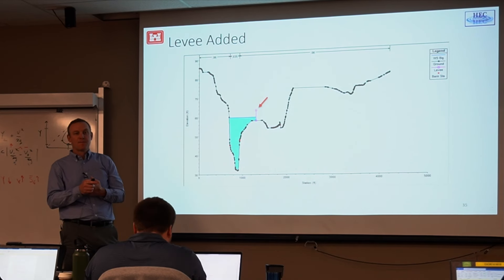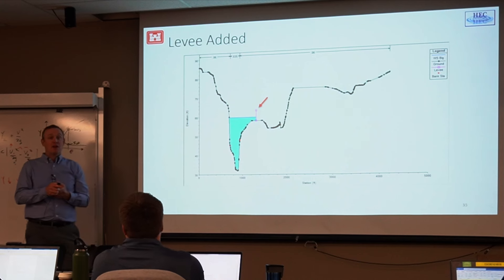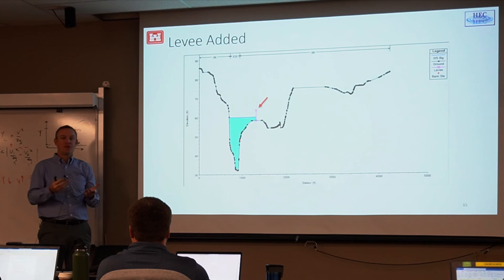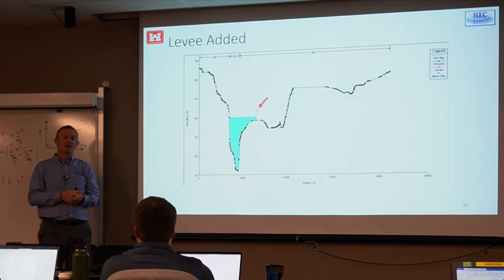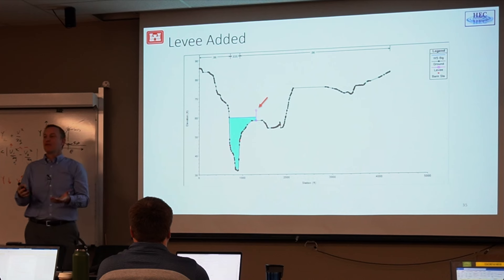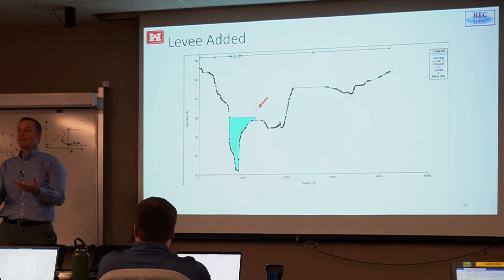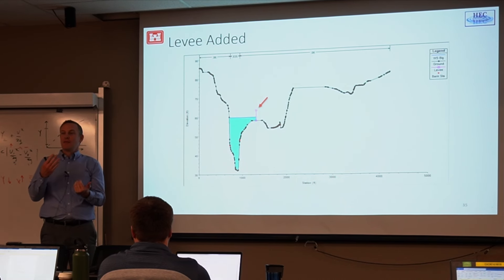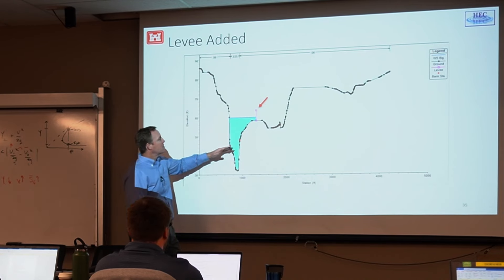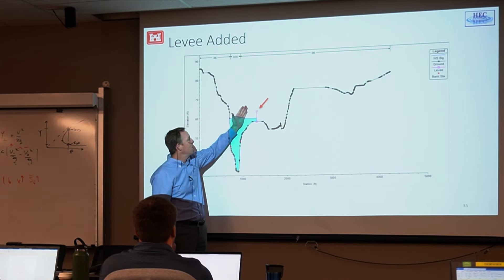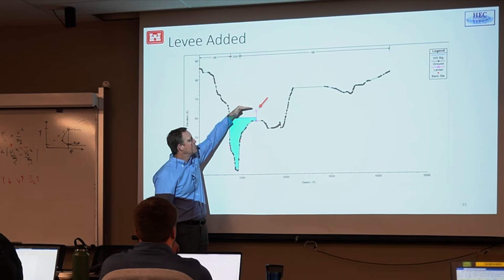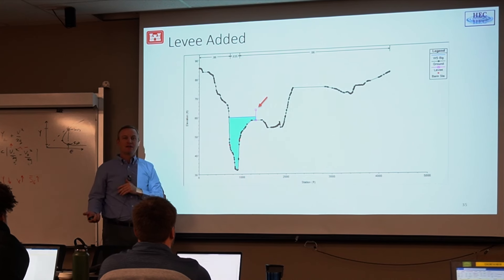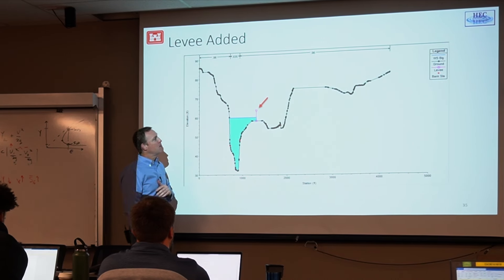A flood wall is essentially the same as a levee in RAS — just built differently. The levee option has no mechanism for the levee to remain once the water surface drops below crest — water simply disappears from that side. To properly model this situation, you would need the levee option combined with ineffective flow areas, which becomes complicated. That's why one-dimensional levee modeling is not straightforward.